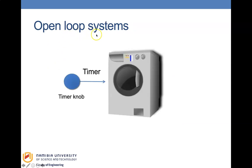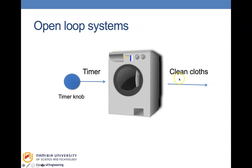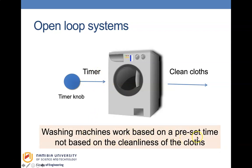A washing machine is an open loop system. When you put in your clothes and set the timer, it goes through cycles of getting water, soap, washing, and rinsing, and hopefully you have clean clothes coming out. It is open loop because the system has no way of knowing whether what is coming out is exactly what you desire. Washing machines work based on a preset time, not based on the cleanliness of the clothes.